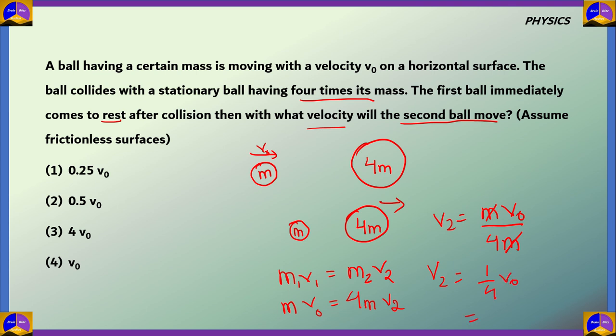Now 1 by 4 can also be written as 0.25 v0. Now if we look at options we can see option 1, 0.25 v0 is there. So option 1 is the correct answer for this question. 2, 3 and 4 would be incorrect. So that is the question on physics.